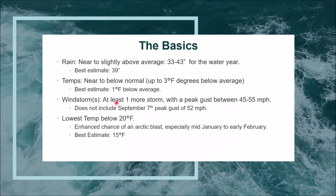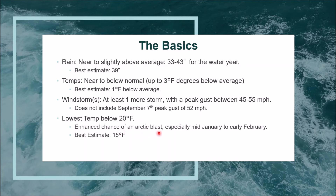For windstorms, I'd be shocked if we didn't see at least one more half-decent storm. I still don't see anything out of the ordinary for peak gusts — somewhere between 45 and 55 miles per hour. The September 7th peak gust of 52 miles per hour came before my October forecast, so I'm excluding it from this analysis. I'm holding on to the low temperature prediction of below 20 degrees since that was historically and statistically significant. Given the analog years showing an enhanced chance of an arctic blast, especially in January through early February, my best estimate for the low is right around 15 degrees.